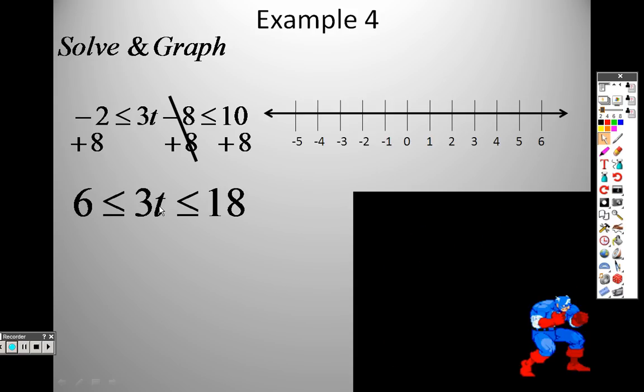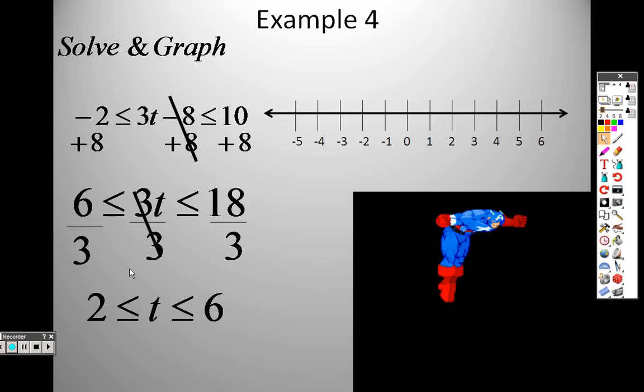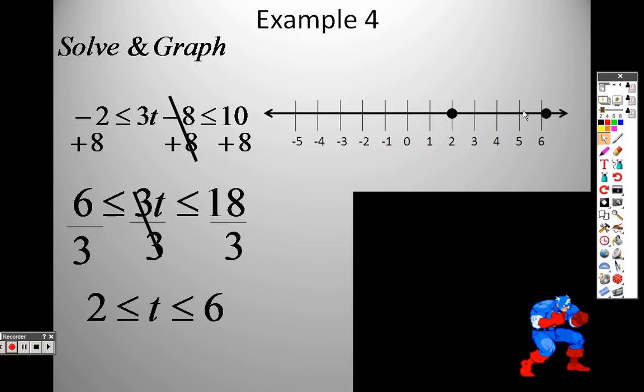This is 3 times T, so whatever I do to one side, I have to do to all of them. Which means I divide everything by 3. So the 3s cancel out in the center. 6 divided by 3 is 2. 18 divided by 3 is 6, and the T is in the center. This is written like an AND, meaning I'm going to shade everything in between. So I go to the 2, and because it's less than or equal tos, I put a close point there and a close point there, and I shade everything in between them.